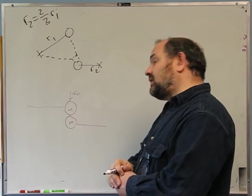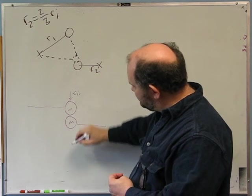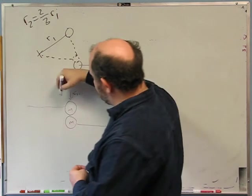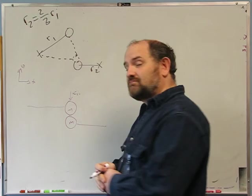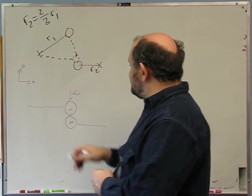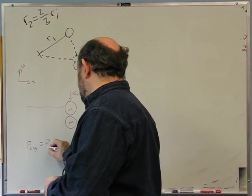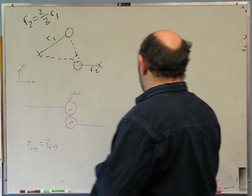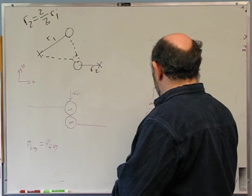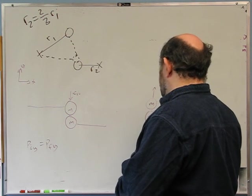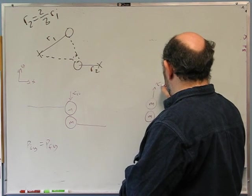We also have momentum conservation because the external forces — once we've turned these rods into strings so they can't exert sideways forces — are along the x direction, not along the y direction. So we have momentum conservation in the y direction: p_iy must equal p_fy. After the collision, this ball bounces off with velocity v1f and the other has velocity v2f.